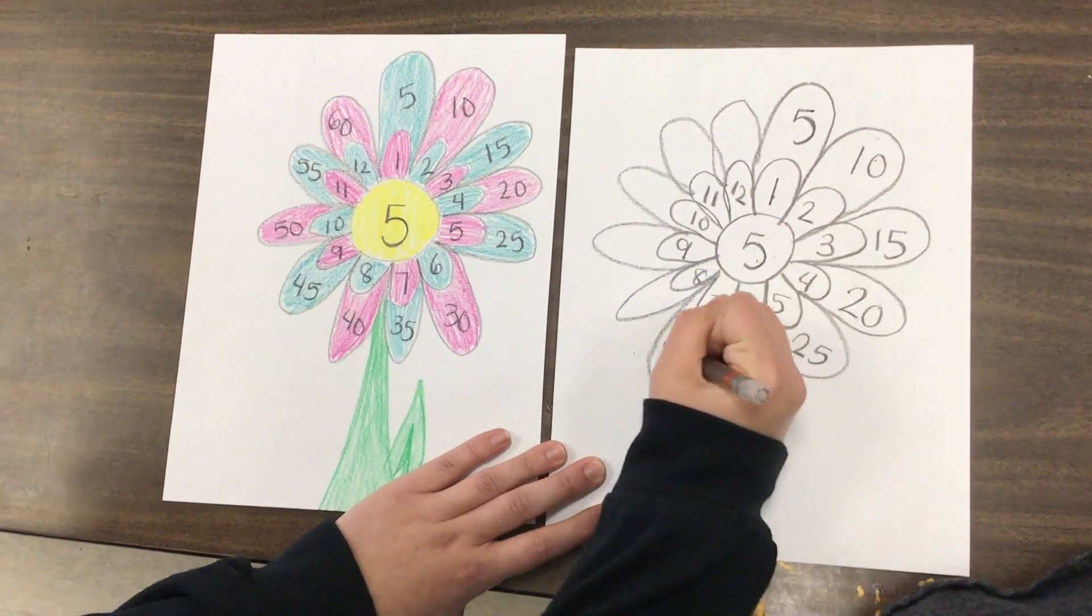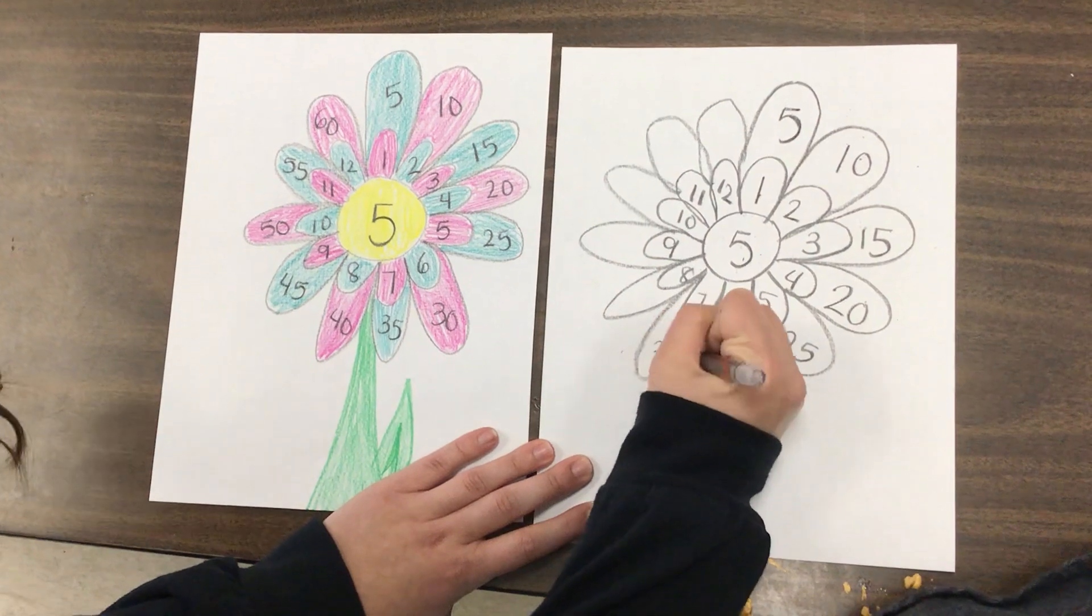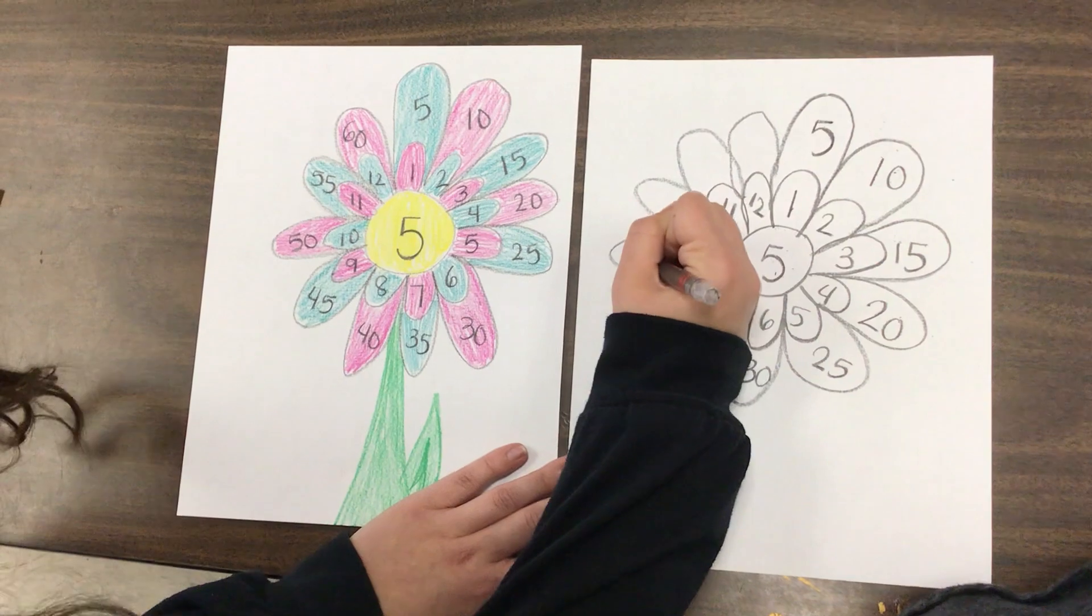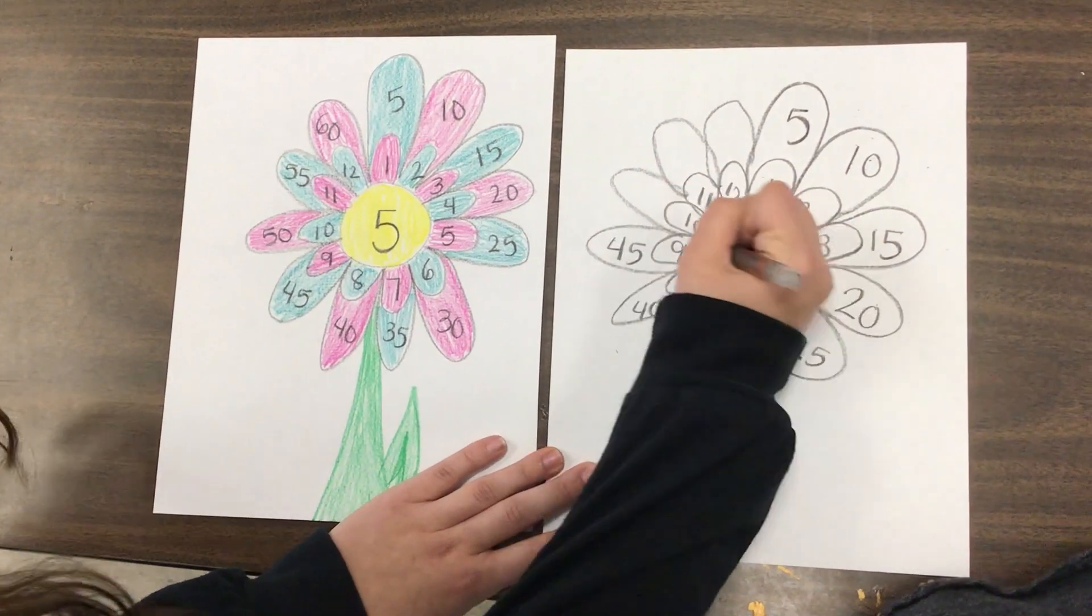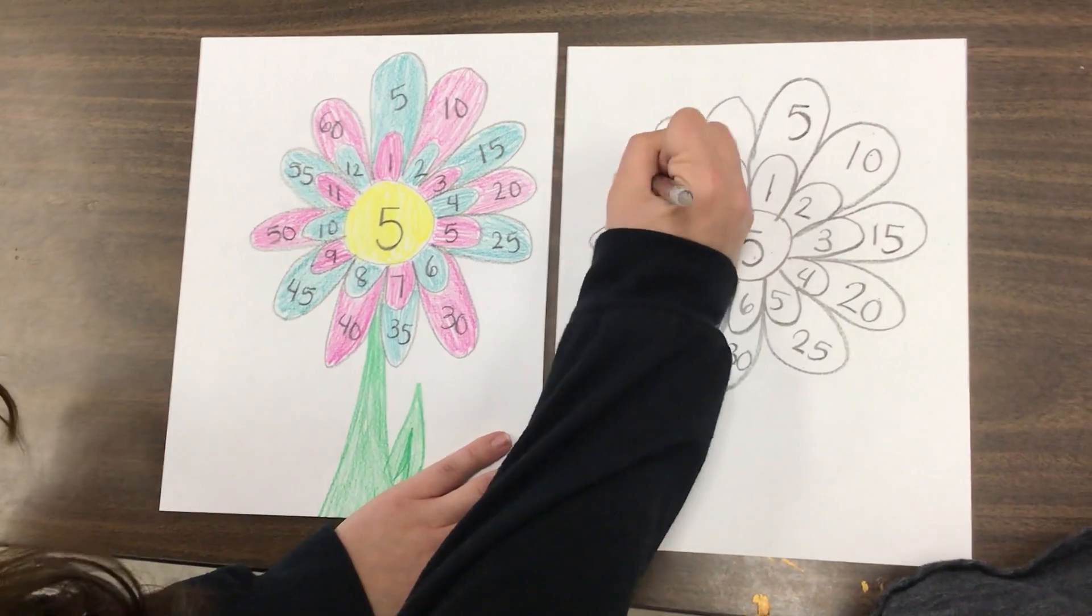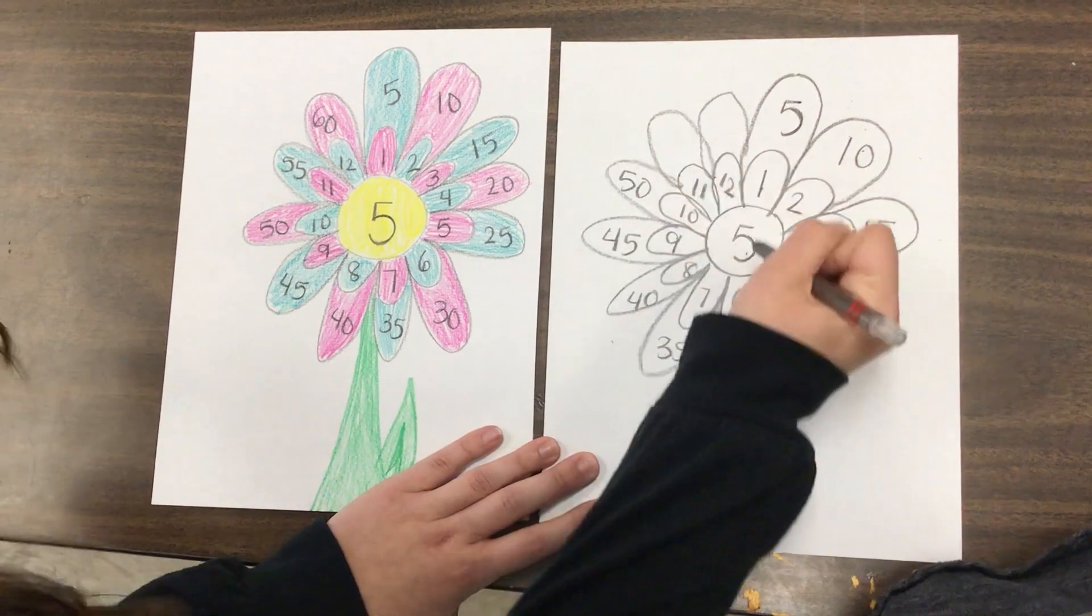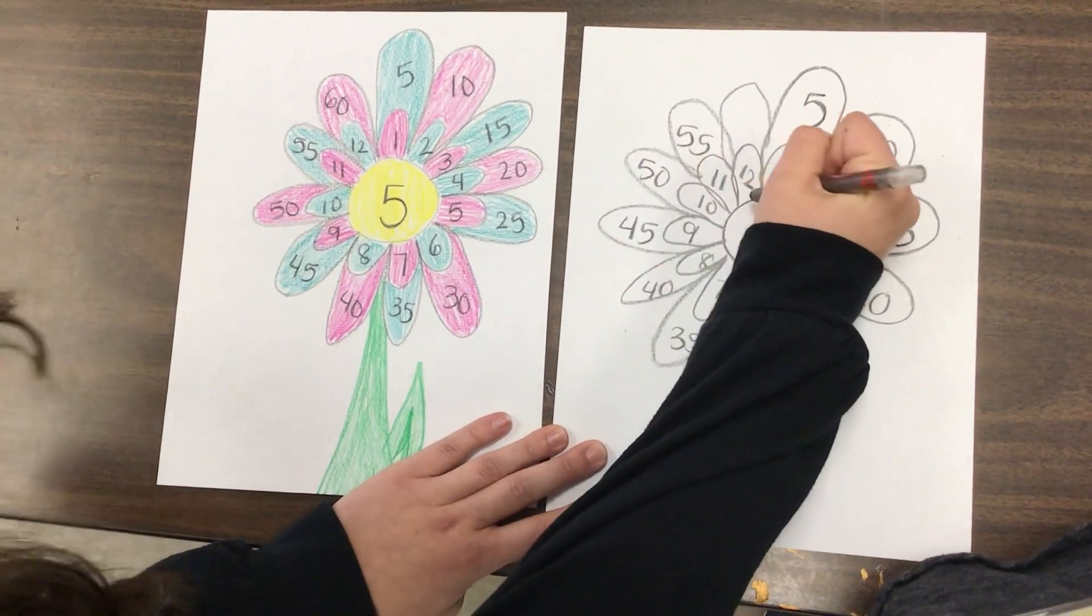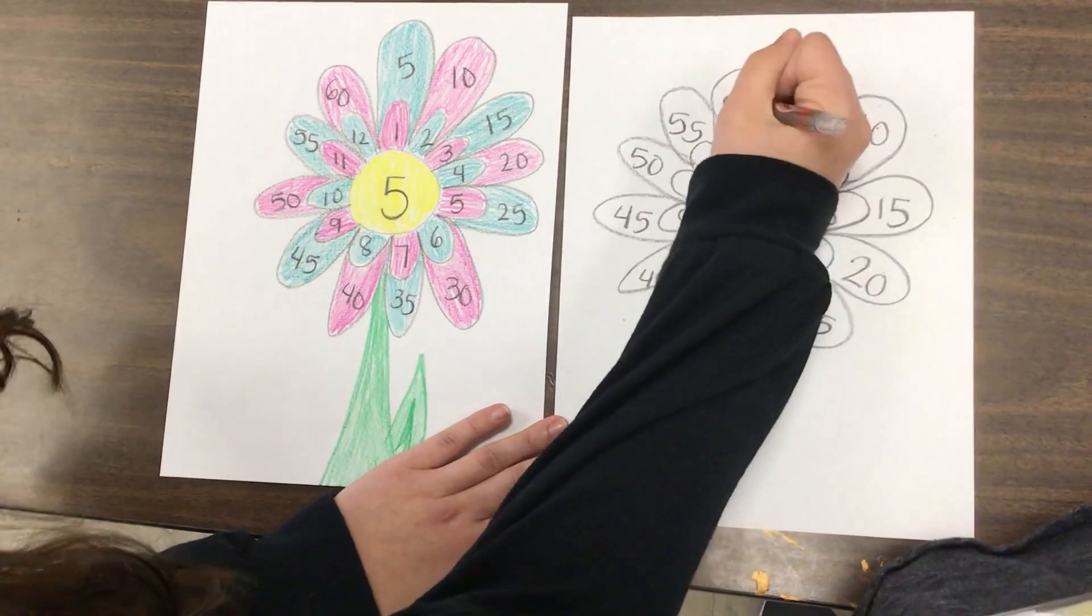Eight times five? Forty! Nine times five? Forty-five! Ten times five? Fifty! Eleven times five? Fifty-five! And last is twelve times five? Sixty!